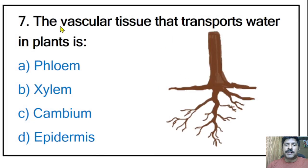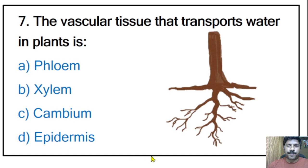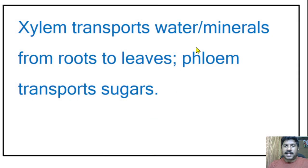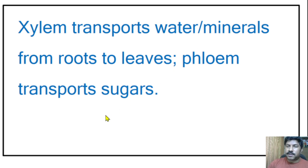Seventh question: the vascular tissue that transports water in plants is phloem, xylem, cambium, or epidermis? The correct answer is xylem. Xylem transports water and minerals from roots to leaves, while phloem transports sugars.